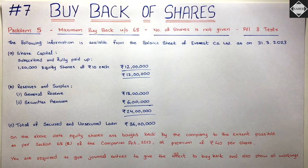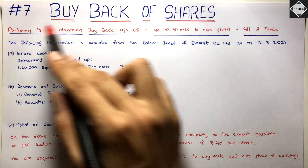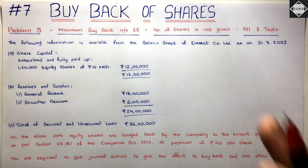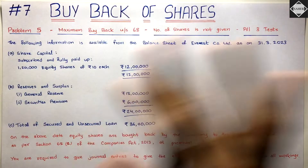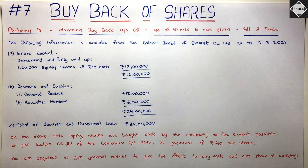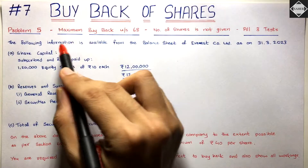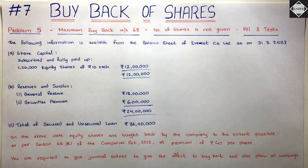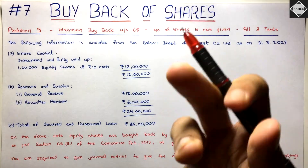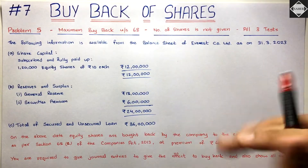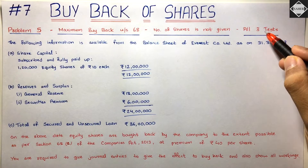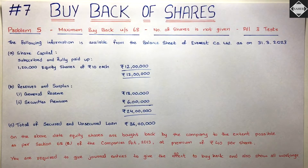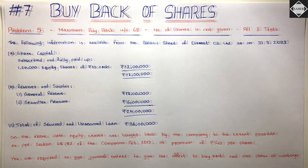Welcome back to Sahab Academy. Today in the seventh video of the buyback chapter, we are going to solve another question where the number of shares to buy back is not given. We have to find that out - the question will say to go for maximum buyback. The buyback price is given, but the number of shares is silent. We still have to do all three tests to find the number of shares.